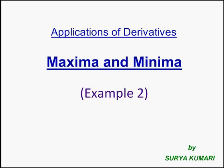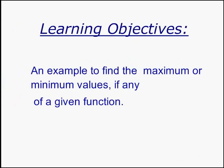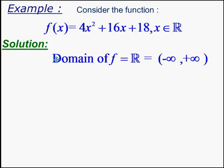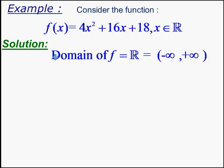In this lecture on maxima and minima, we will be discussing one more example to find the maximum or minimum values, if any, of a given function. The function given here is f(x) = 4x² + 16x + 18, where x belongs to the set of all real numbers. Clearly, the domain of this function is the set of all real numbers because f is a polynomial function.